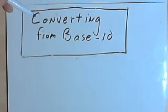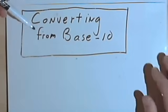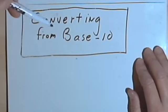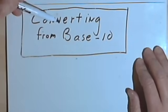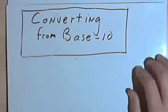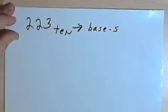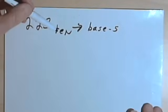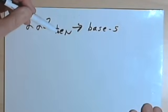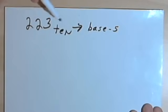This video is going to be about converting numbers from base 10 to some other base. There's a companion video that shows how to convert into base 10 from other bases. So let's look at converting a number. Here I've got the number 223 base 10, and I want to convert it to base 5. There are two ways to do it — I'll show you both ways.